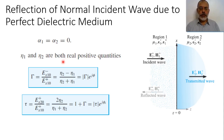So in this case, the reflection coefficient gamma would be eta2 minus eta1 over eta2 plus eta1. If eta2 is greater than eta1, the phase shift would be zero. If eta2 is less than eta1, the phase shift would be pi.